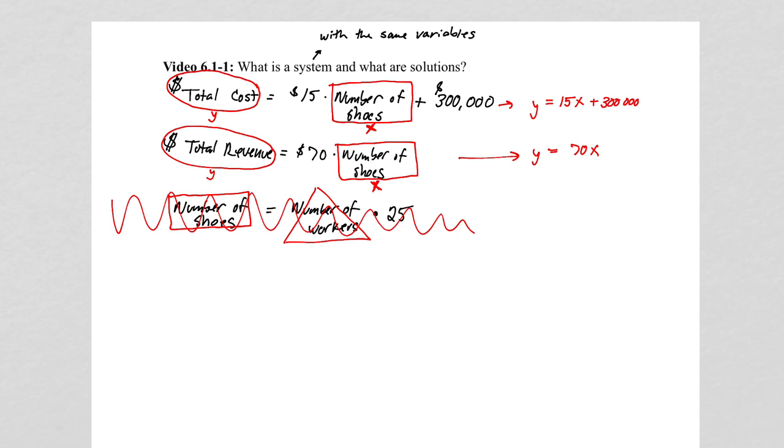So, we could then solve those two equations. And let's actually, we're going to graph those. So, we're going to put the number of shoes on the x-axis. And we will put dollars. And in this case, it would be the revenue and the cost on the y-axis.